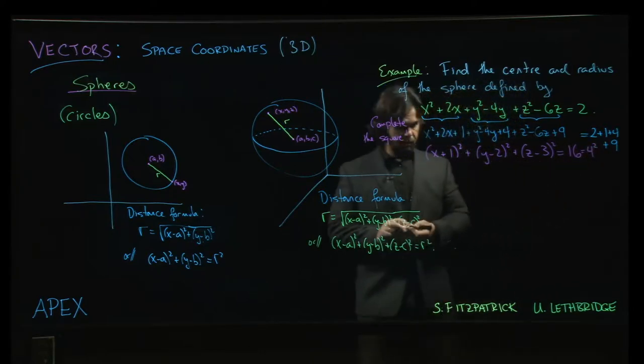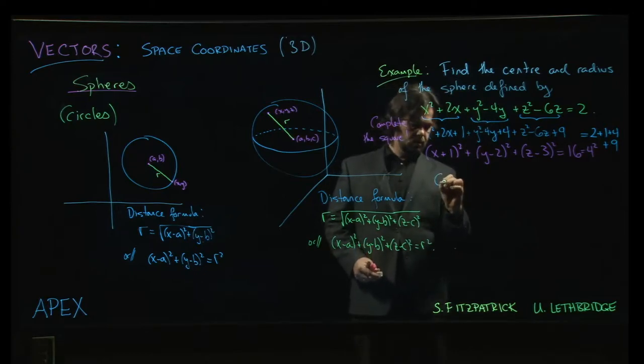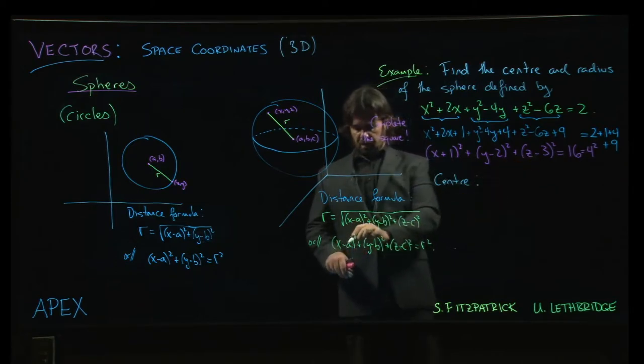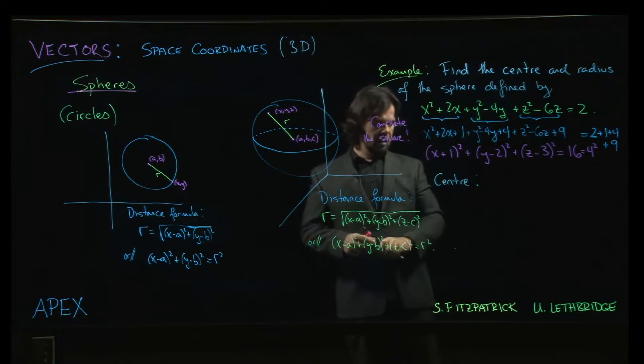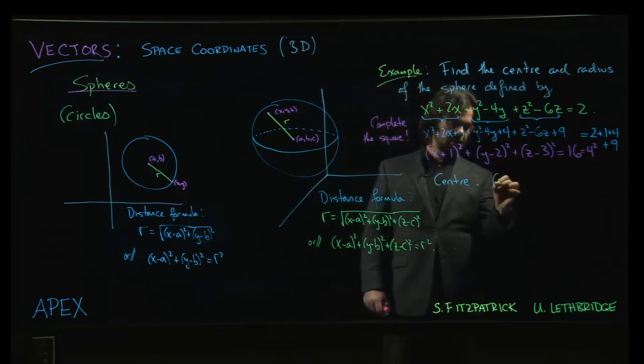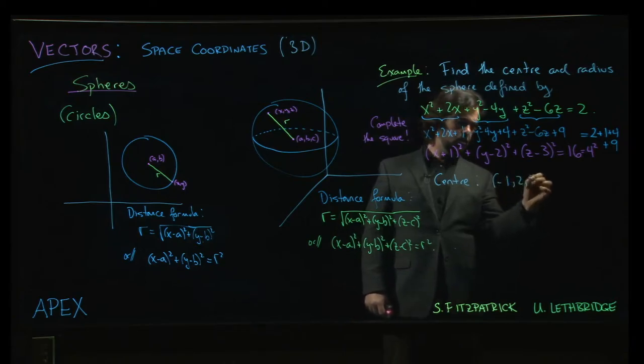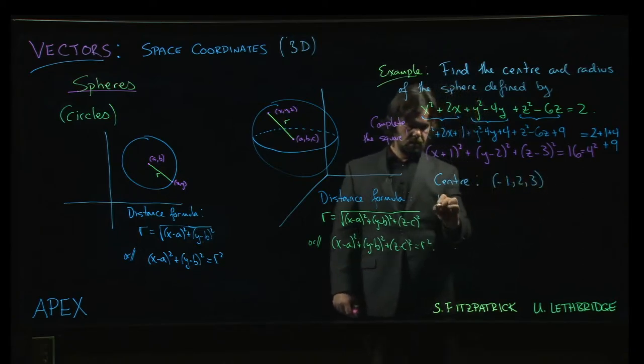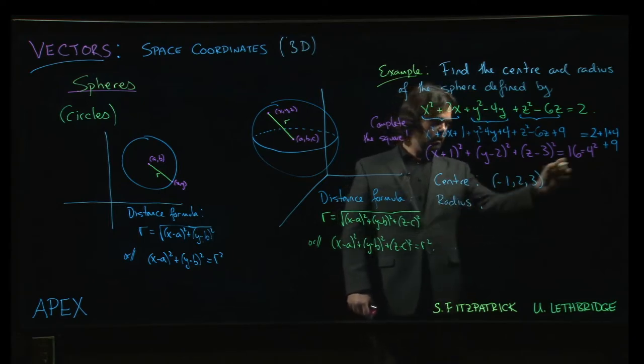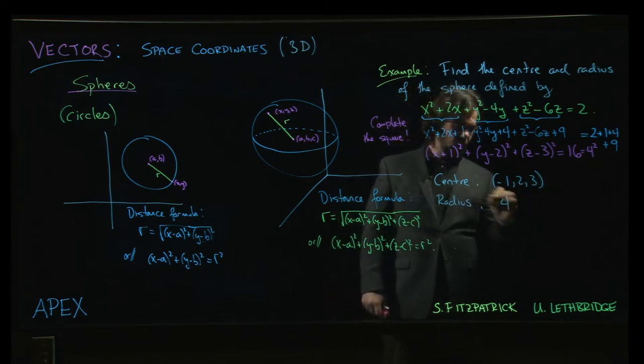So from here, we can compare to the standard equation. Now we've got it in that standard form. x minus a, y minus b, z minus c. So x plus 1 is x minus minus 1. So the center is going to be minus 1 and then 2 and then 3. The radius is 4.